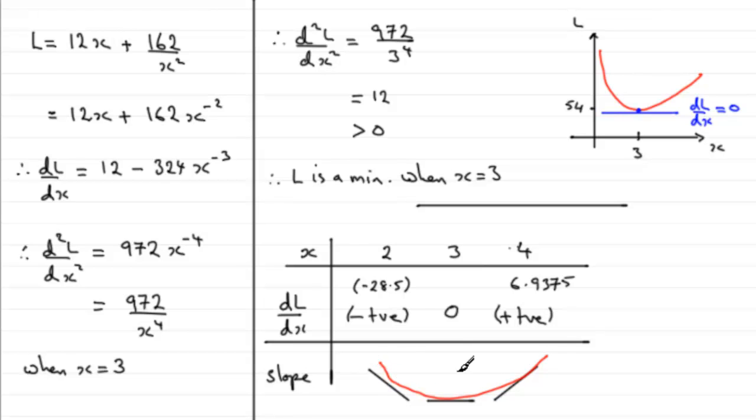So from this we could say again that therefore L is a min when x equals 3. So you've got two methods then, and hope you've been able to follow that all right.